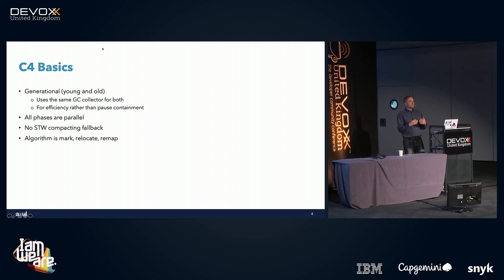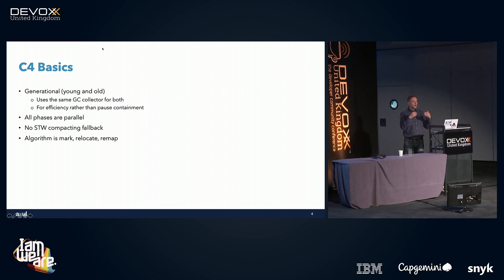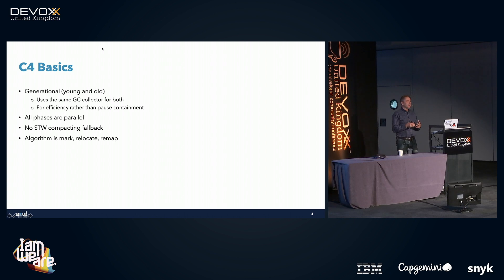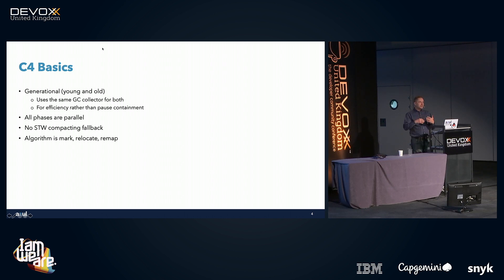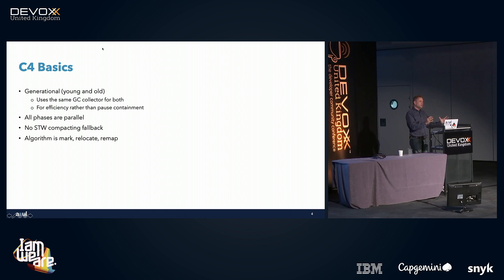All phases of our collector are not only concurrent — meaning they run at the same time as application threads, so no GC pauses — but also parallel, decomposed into multiple threads handling different parts of the workload to get work done more quickly. Critically, C4 does not have a stop-the-world compacting fallback. G1, for example, will reach a point where fragmentation is too high or the allocation rate too high and fall back to stopping everything for a full compacting collection on the old generation — that's when you see very large pause times.